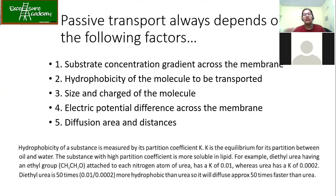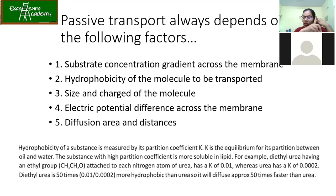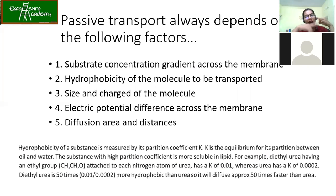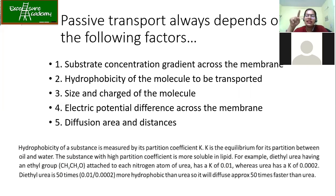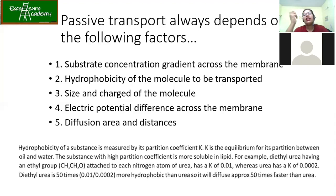The factors on which passive transport depends are: first, the concentration gradient across the membrane; second, the hydrophobicity of the molecule — if it is highly hydrophobic it will be transported faster; third, the size and charge of the molecule; and fourth, the electrical potential difference across the membrane, as expressed in the formula ΔG = −RT ln(C_high/C_low) ± zFΔV.